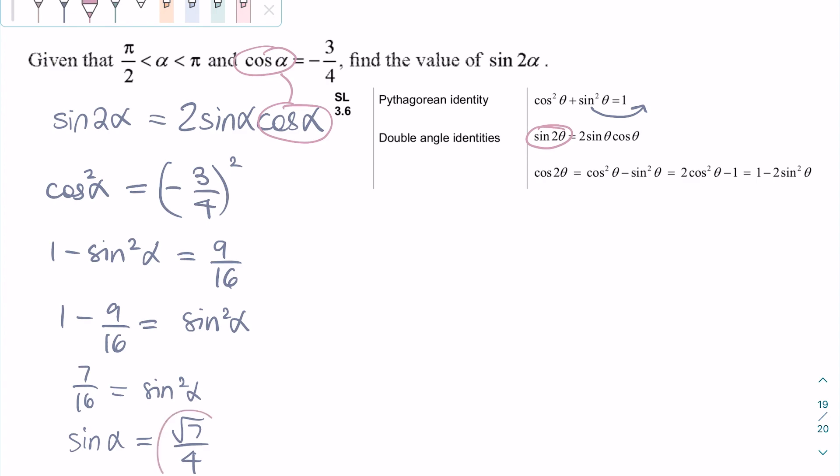So we can now rewrite sine 2α purely in terms of numerical values. We write 2 times the value of sine alpha, which is square root of seven over four, and then cosine alpha, which is minus three over four. So in the end, we get sine 2 alpha is minus three square root of seven over eight.